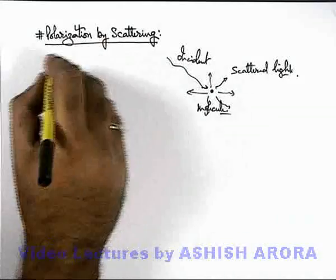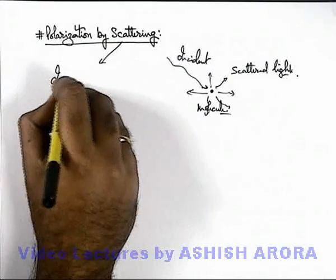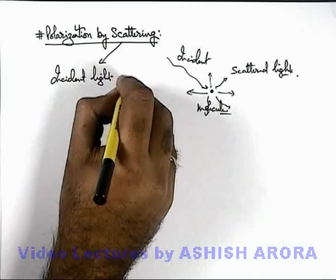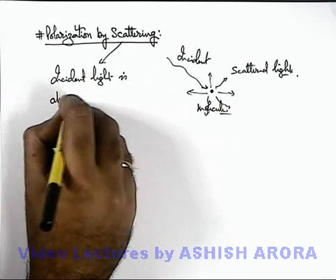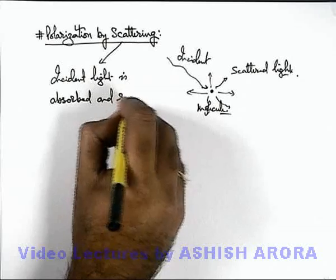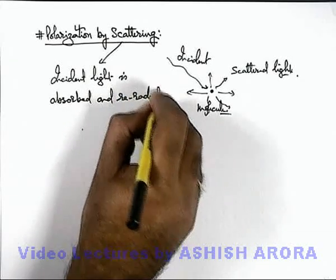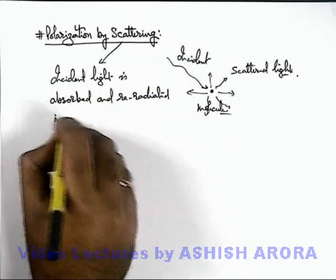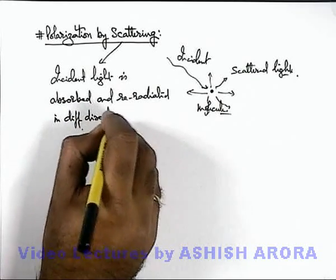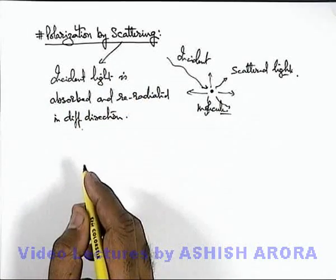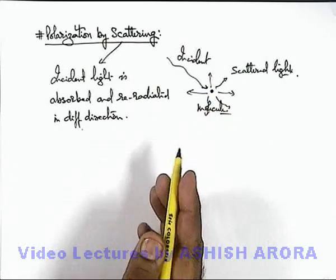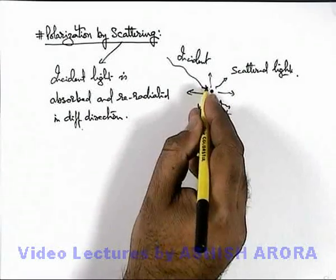So in scattering, incident light is absorbed and re-radiated in different directions. This phenomenon we call scattering of light. The phenomenon is instantaneous — there is no significant time lag in the process.